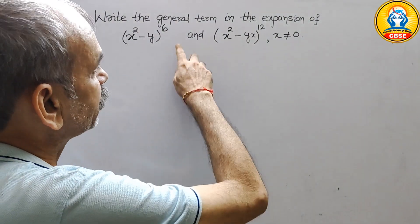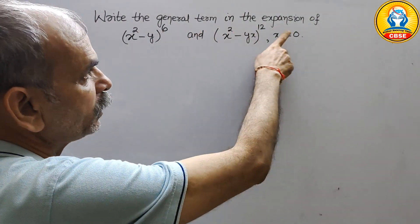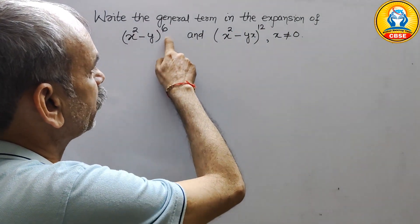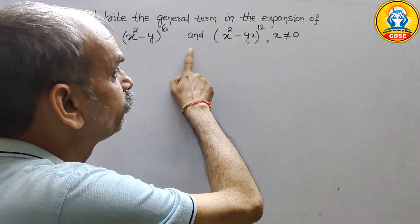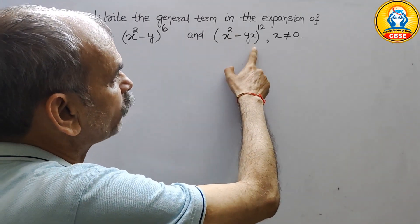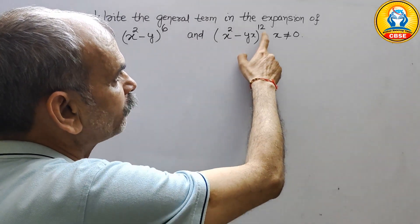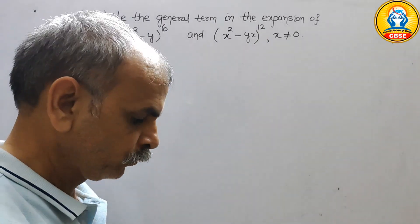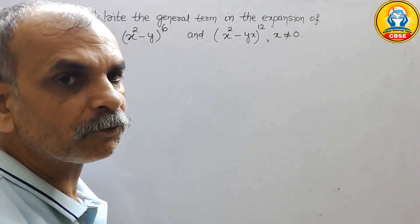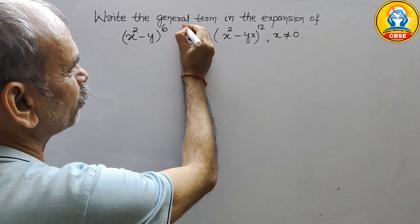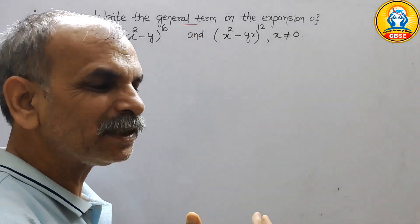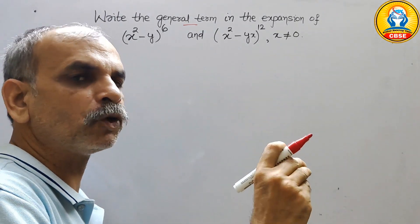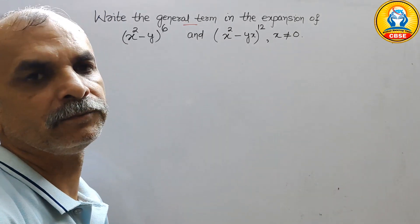The question is to write the general term in the expansion of (x² - y)⁶ and (x² - yx)¹² where x is not equal to 0. They have told us to find out the general term. General term means it is a common term — wherever we put the value we will get our answer.